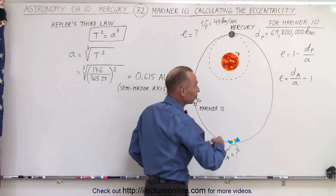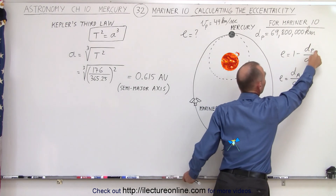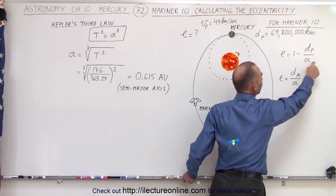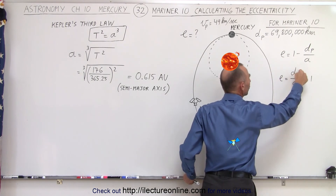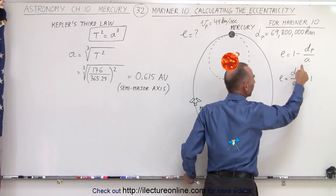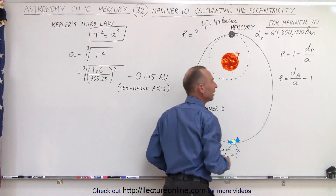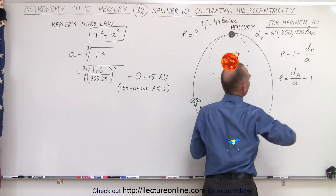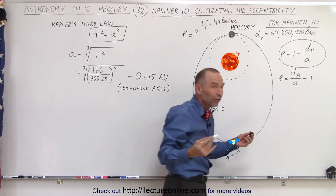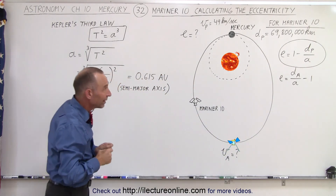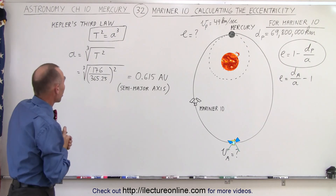We have two equations we can use. We can say that the eccentricity is equal to 1 minus the distance at perihelion divided by the semi-major axis, or the eccentricity is equal to the distance from aphelion to the Sun divided by the semi-major axis minus 1. Since we know the distance to the perihelion, we're going to employ the first equation. But first, we need to calculate the semi-major axis, and for that we can use Kepler's third law.